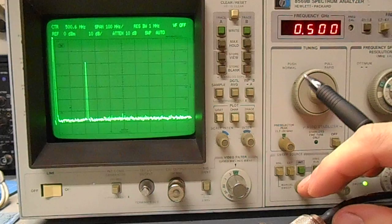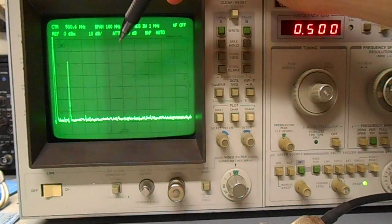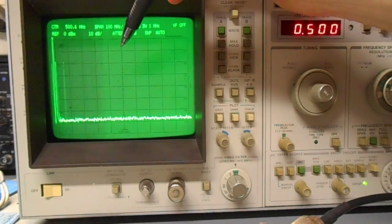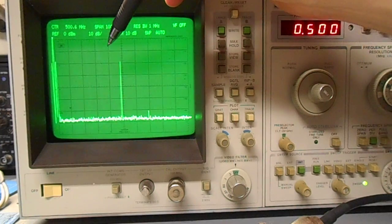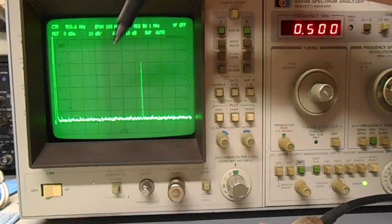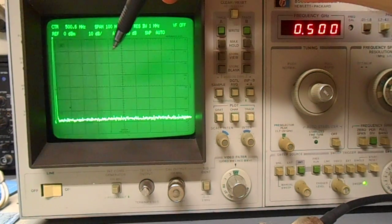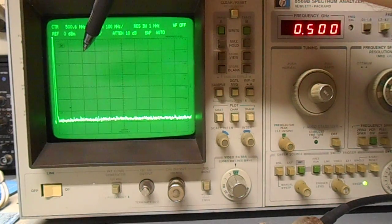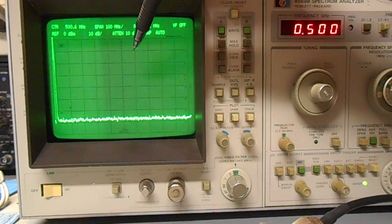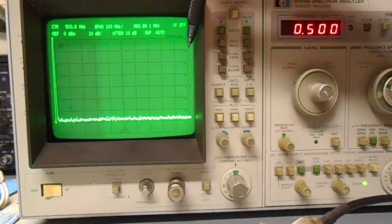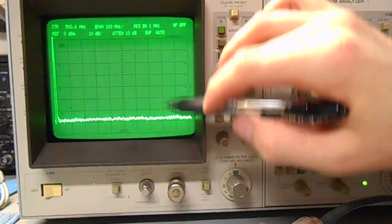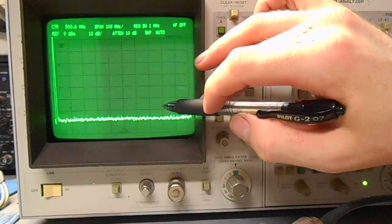The spectrum analyzer right now is centered at 500 MHz. It's our center right here with 100 MHz per division. There's 10 divisions, so that's 500 MHz, 400, 300, 200, 100, 600, 700, 800, 900, 1000. The response is 10 dB per vertical division.